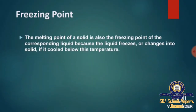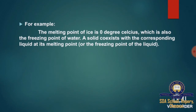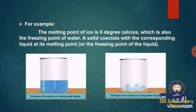Now we move on to the freezing point. Conversion of liquid into solid on cooling is called freezing. When we take liquid, it can be converted into solid while cooling. For example, the melting point of ice is 0 degrees Celsius, which is also the freezing point of water. A solid coexists with the corresponding liquid at its melting point or the freezing point of the liquid. For example, formation of ice (solid) by cooling water (liquid).